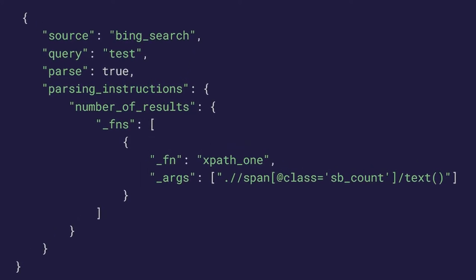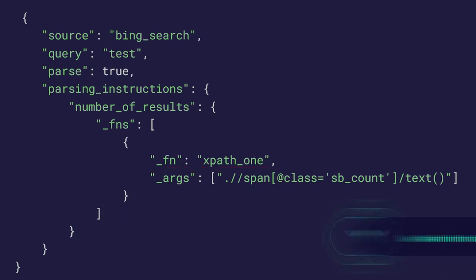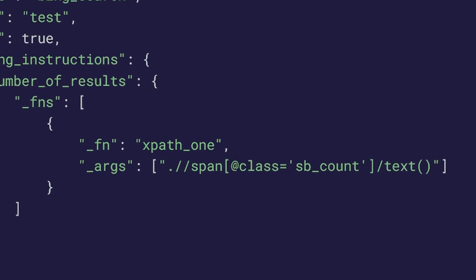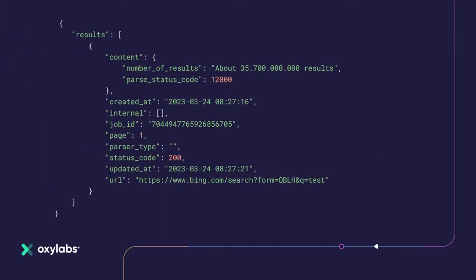A couple of essential steps to remember: step one, you must provide the parse true parameter; and step two, parsing instructions should be described in the parsing_instructions field. The sample parsing instructions shown above specify that the aim is to parse the number of search results from the scraped document and put the results in the number_of_results field. The pipeline describes a list of data processing functions to be executed in order, each taking the output of the previous function as its input. In the sample pipeline, the XPath1 function is used. This function allows you to process an HTML document using XPath expressions and XSLT functions, specifying the exact path where the target element can be found. The parse result of the sample job above should look like this.